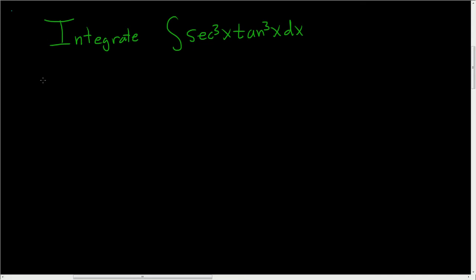Integrate secant cubed times tangent cubed. Solution. So we have a tangent here being raised to an odd power. So what we'll do is we're going to save a copy of secant x tangent x. And then we'll let u be secant x and everything should work out.